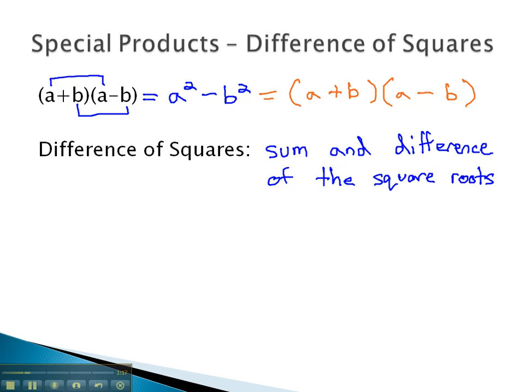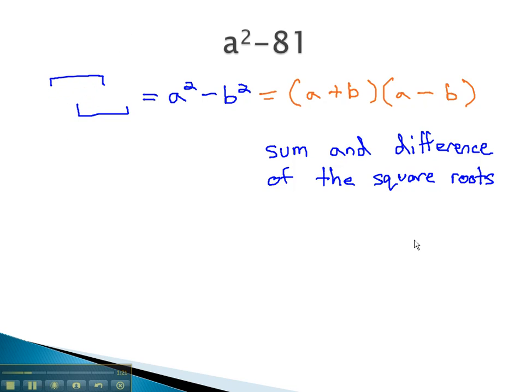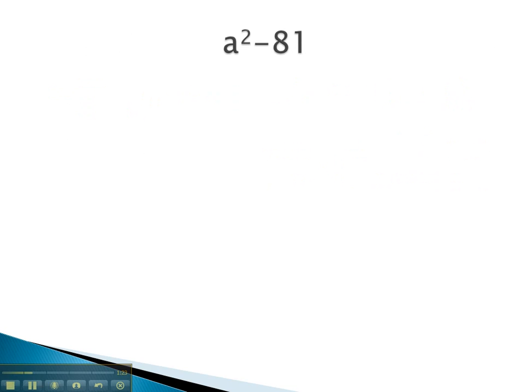Let's take a look at some examples where we can use this very property to help us factor. In this case, we notice the two terms are subtracted. So we can take the square root of the a squared, which is a, and the square root of the 81, which is 9, and use those to make our factors.